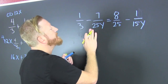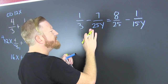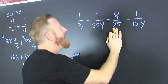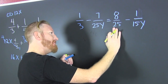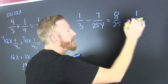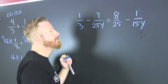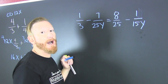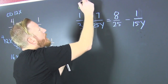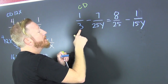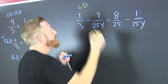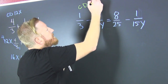Up here: 1/3 minus 7/25 y is equal to 8/25 minus 1/15 y. It'd be wise for us to find a common denominator. The common denominator between the numbers — looking like 75.